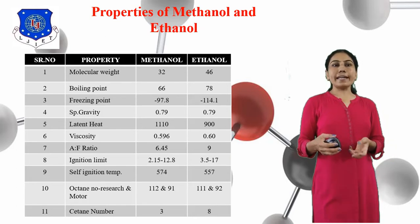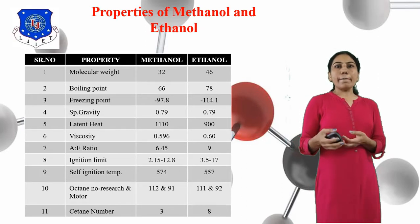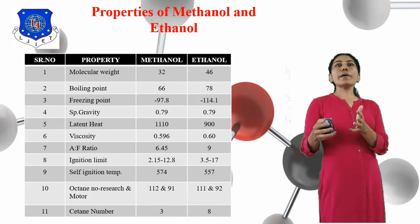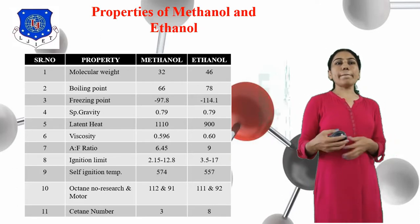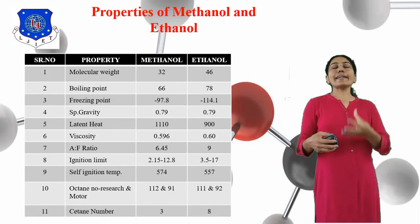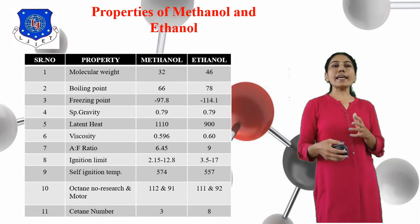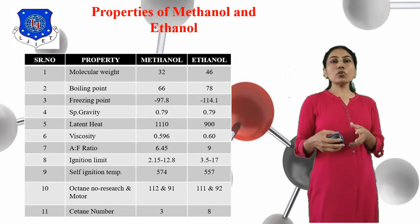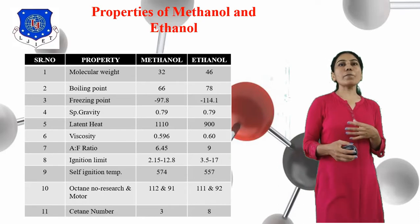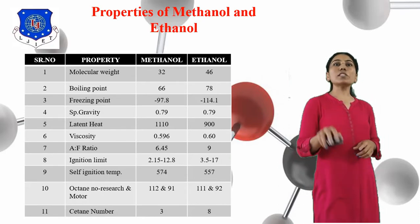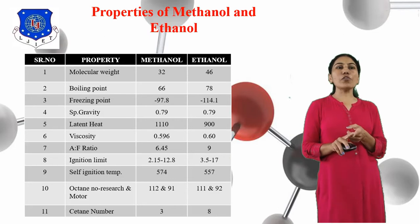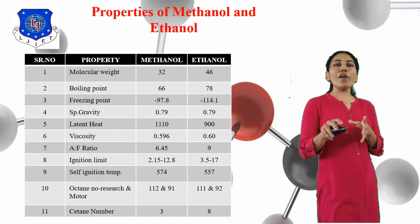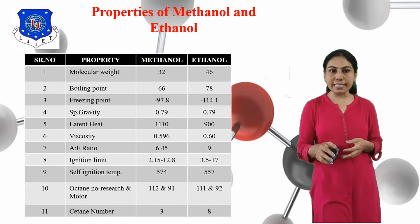Latent heat means the heat that converts solid into liquid or vapor, and liquid into vapor, without a change in temperature. The latent heat of Methanol is 1110 and Ethanol is 900. Viscosity means the property of the fuel which opposes relative motion between two surfaces of the fuel. The viscosity of Methanol is 0.596 and Ethanol is 0.60.